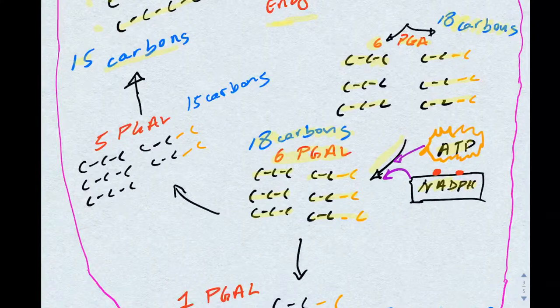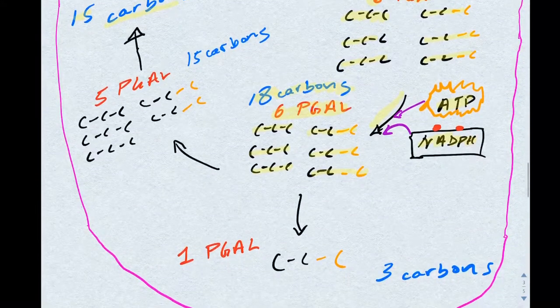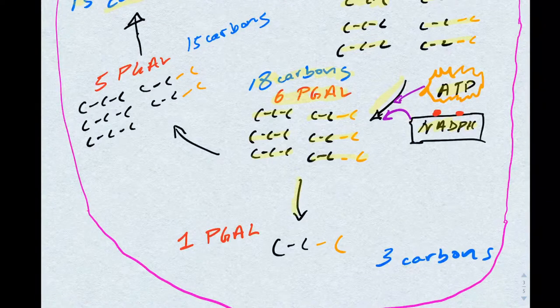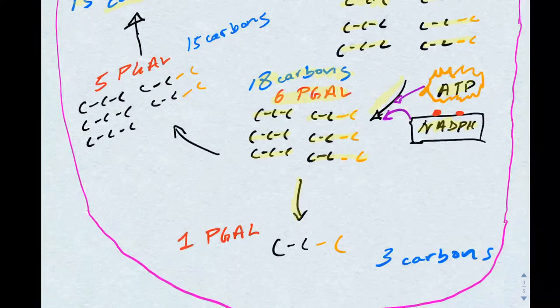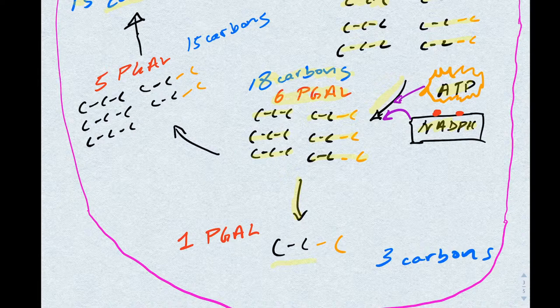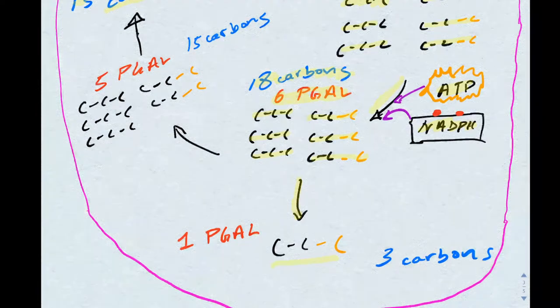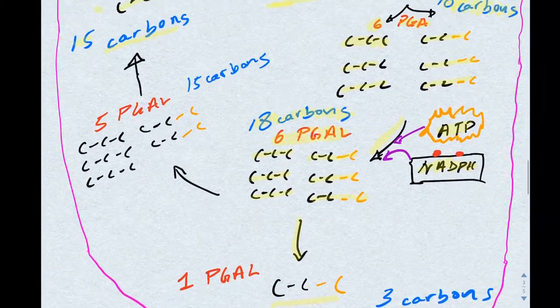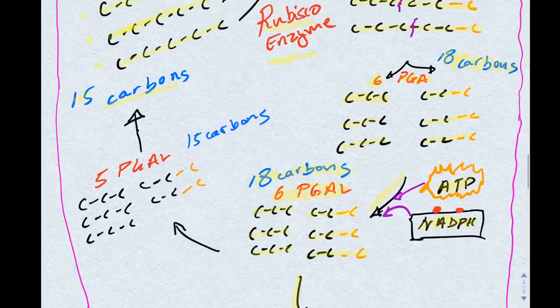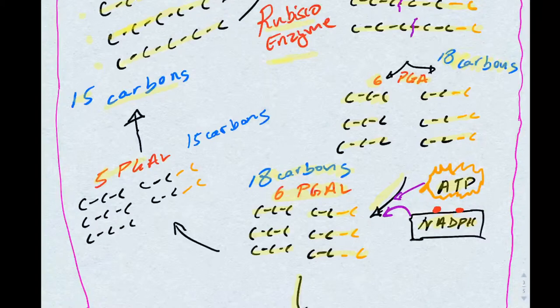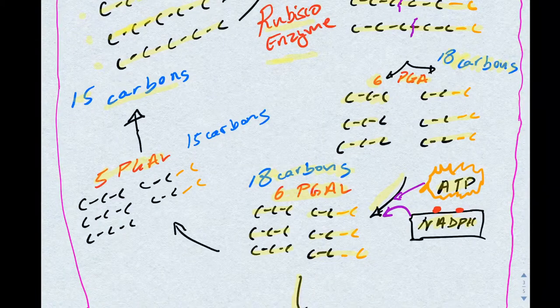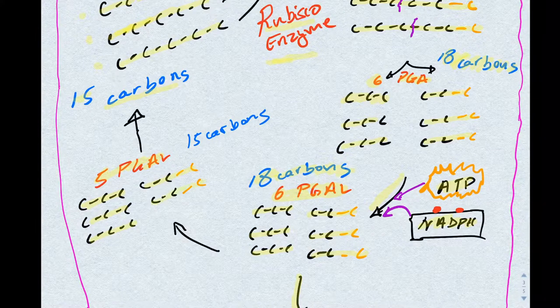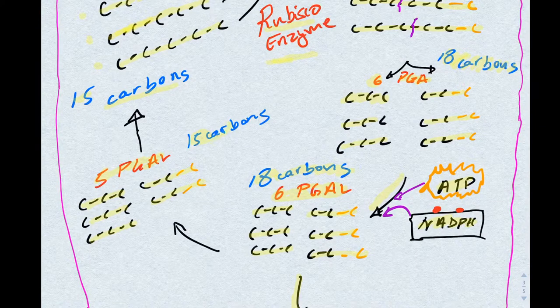However, at this point in the carbon reaction, one of these PGALs exits the loop. And we have to account for it right here. Once this PGAL has exited the loop, we now are left with five PGALs. If we count up our carbons at this point, we now have 15 carbons.